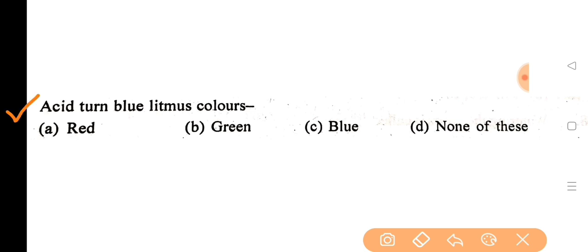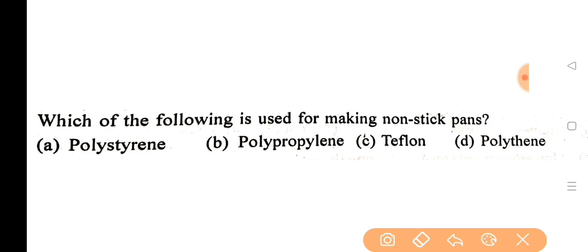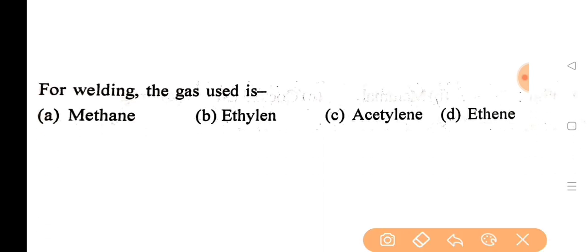Next question: acid turns blue litmus paper? Correct answer is option A, red. Next question: which of the following is used for making non-stick pans? Correct answer is option C, teflon.